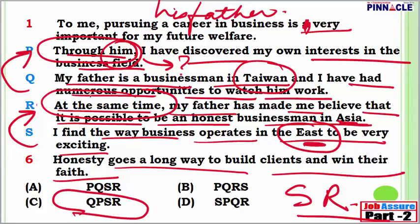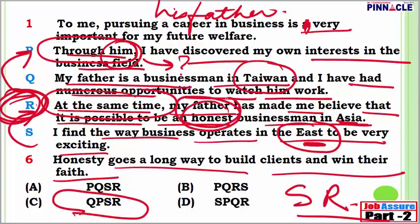Let me fit it in now. To me pursuing a career in business is very important for my future welfare. My father is a businessman in Taiwan and I have had numerous opportunities to watch him work. Through him I have discovered my own interest in the business field. I find the way business operates in the east to be very exciting. At the same time my father has made me believe that it is possible to be an honest businessman in Asia. Honesty goes a long way to build clients and win their faith. The same thought of honesty is continued in line 6, so C is my right answer.